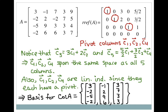My basis for the column space of A is column 1 of A, column 2 of A, and column 4 of A — I always go back to my original matrix. So those vectors are: 3, negative 2, negative 5, negative 2; then negative 1, 2, 9, 6; and 3, 7, 3, 3. This will always be your process in finding a basis for the column space of A: row reduce A, and the pivot columns of your original matrix are a basis for the column space of A.